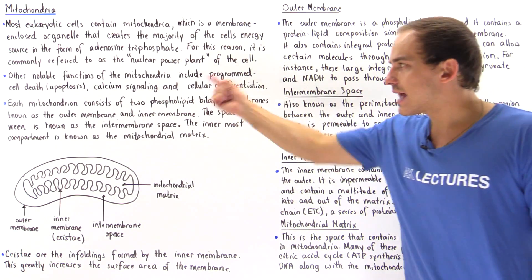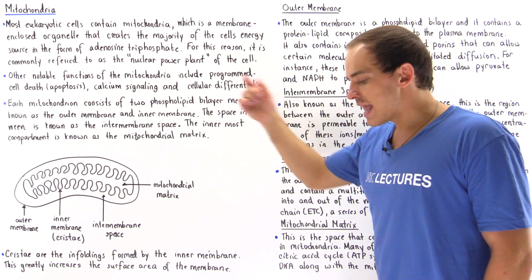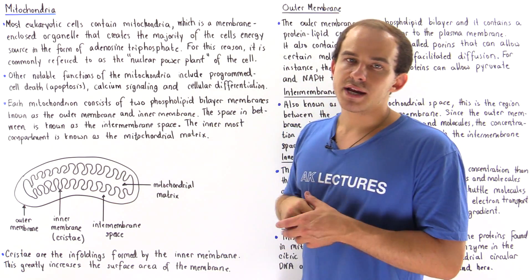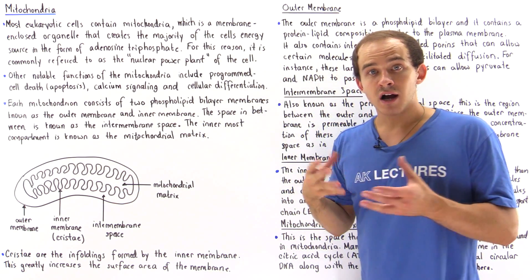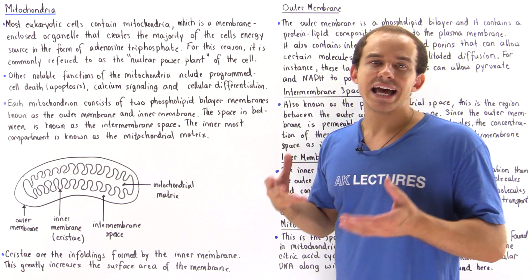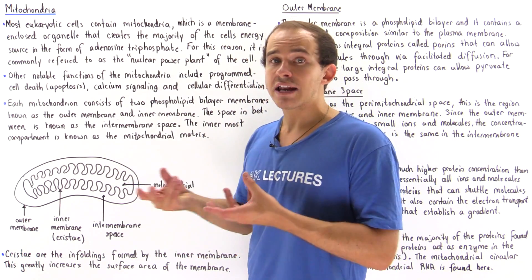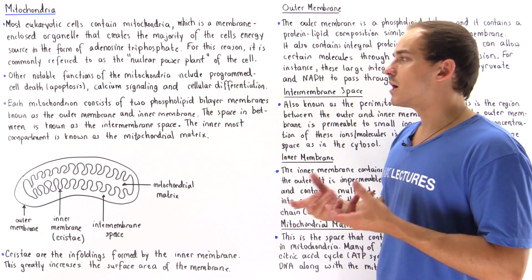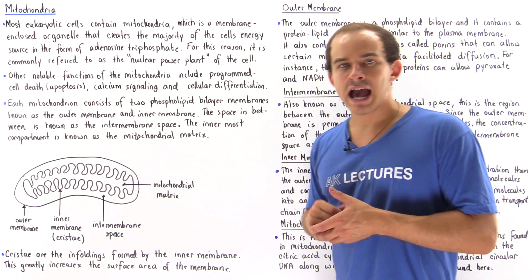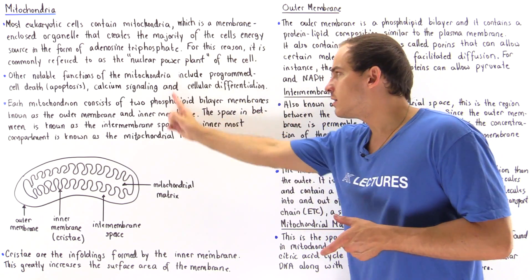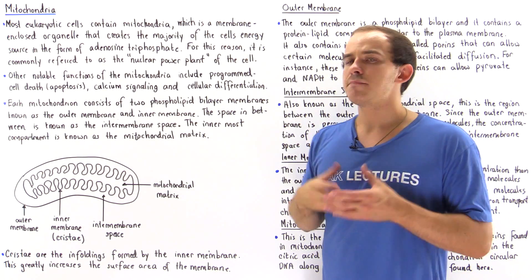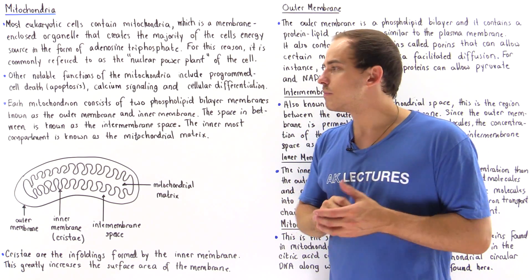The outer membrane of our mitochondria can associate with the membrane of the endoplasmic reticulum, and that creates different types of important signaling pathways using calcium.